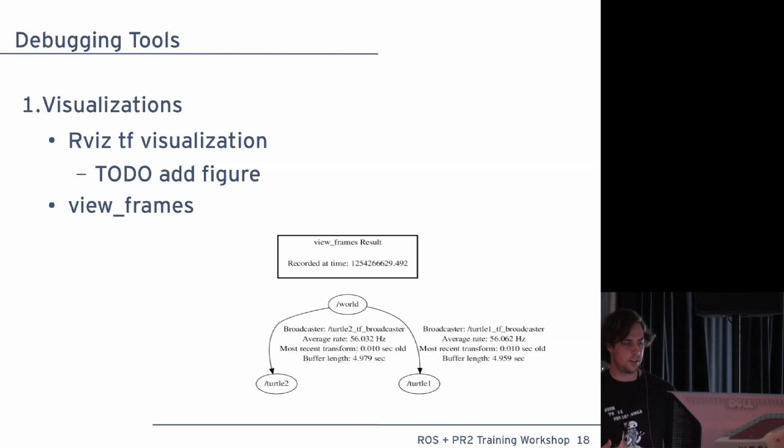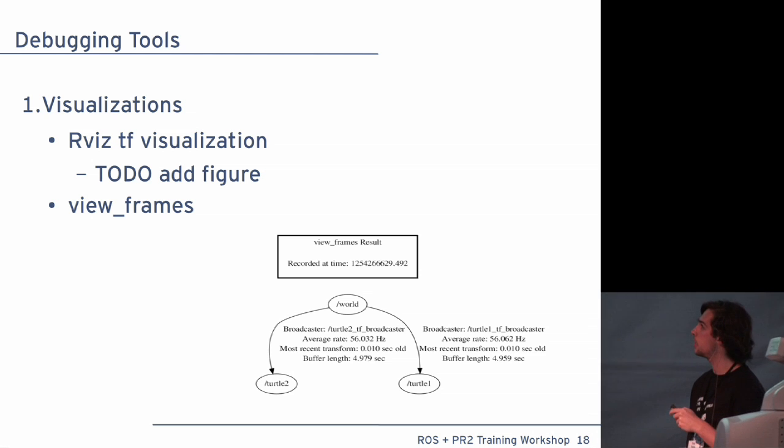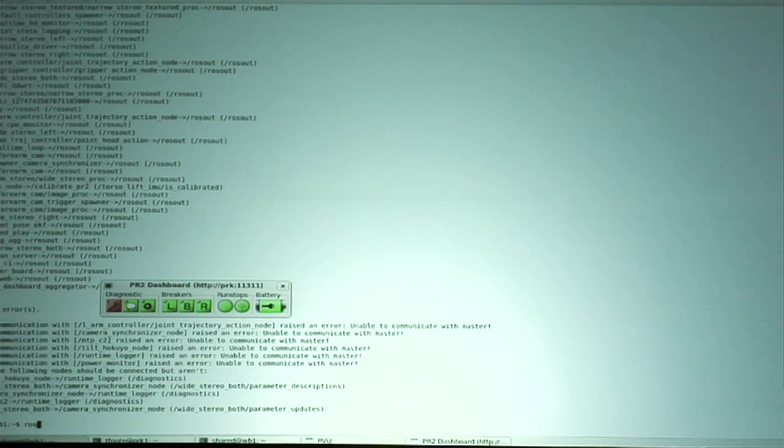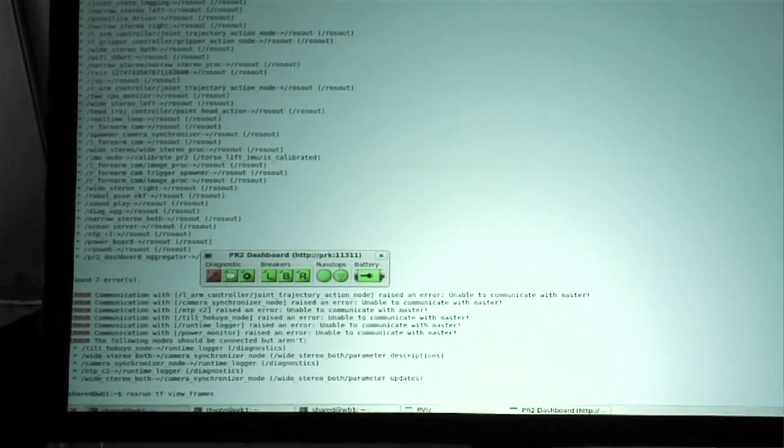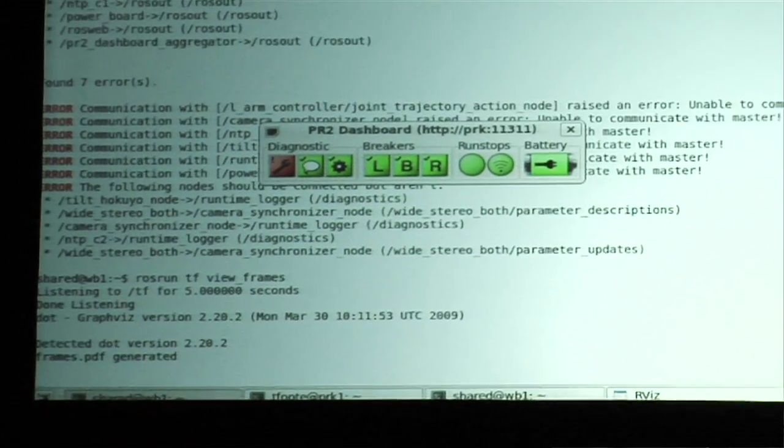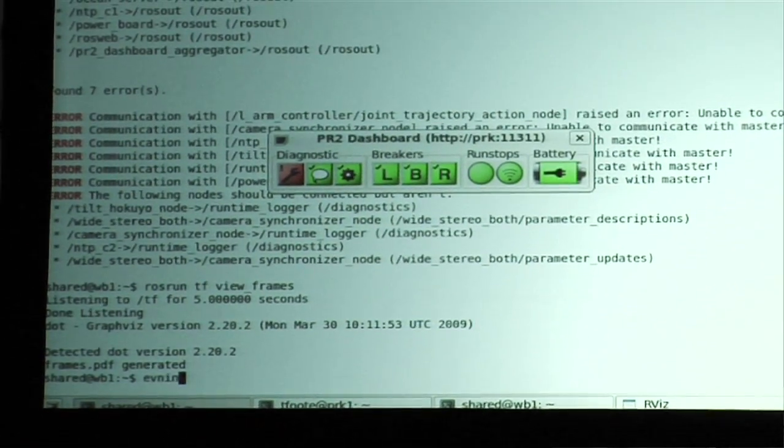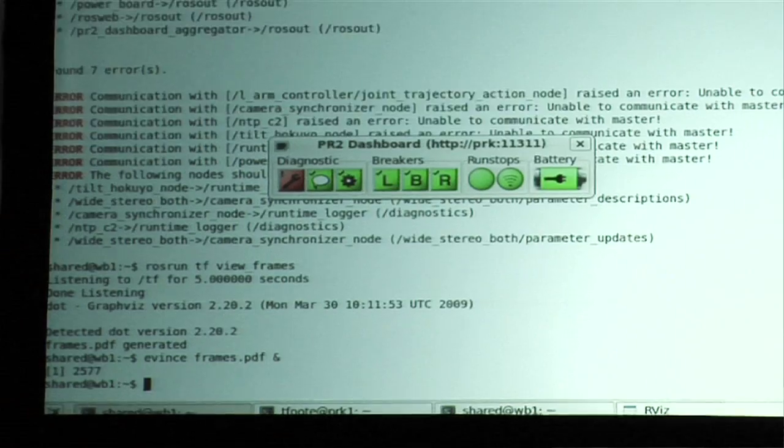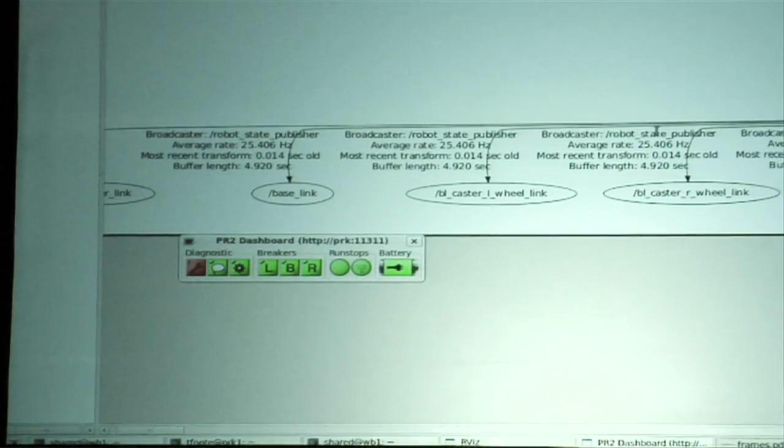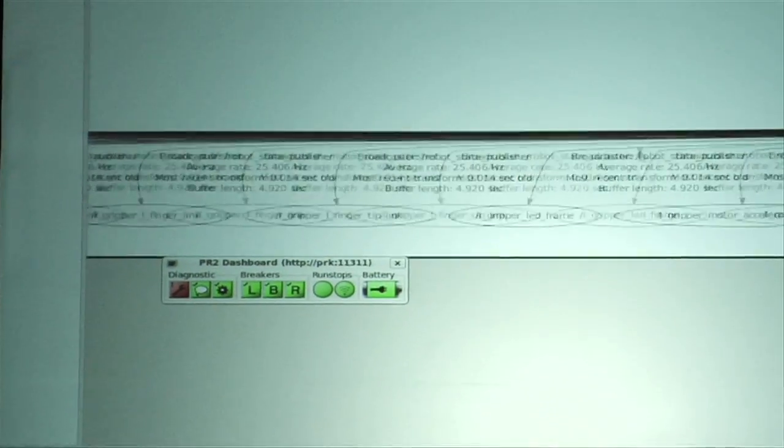Well, you've all seen the RViz TF visualization. The other visualization tool is view frames. It will produce this graph based output with statistics about each link. For you, you just type Ross run. There are two modes for view frames. This one will listen to the network for five seconds and generate the output.